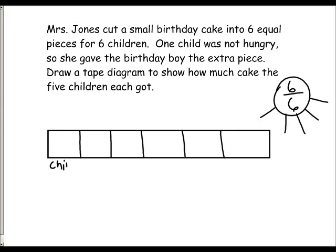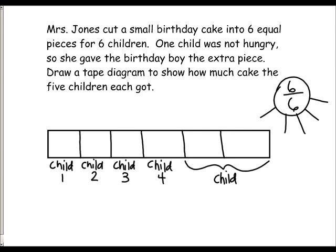Child one is getting one piece of cake. Child two is getting one piece of cake. Child three, one piece of cake. Child four, one piece of cake. And we know that one child didn't want their piece, so the last child is going to get two pieces. So child five will have two pieces. We're going to count just to make sure we have the correct amount of pieces.